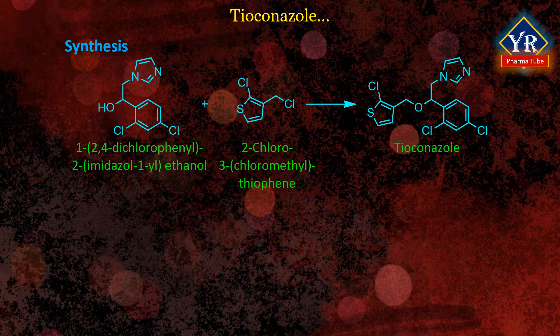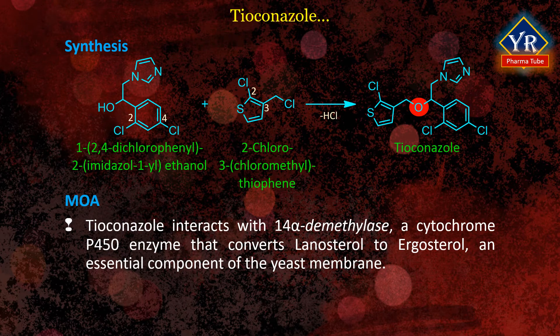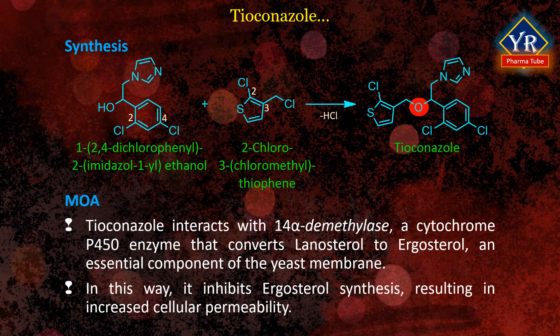Tioconazole is synthesized by a condensation or displacement reaction between 1-(2,4-dichlorophenyl)-2-(1H-imidazol-1-yl)ethanol and 2-chloro-3-chloromethylthiophene. It interacts with 14-alpha-demethylase, a cytochrome P450 enzyme that converts lanosterol to ergosterol, an essential component of the yeast membrane. In this way, it inhibits ergosterol synthesis, resulting in increased cellular permeability.